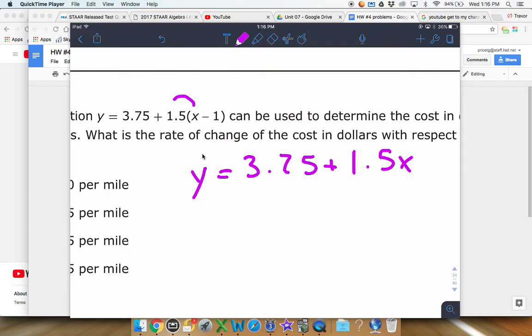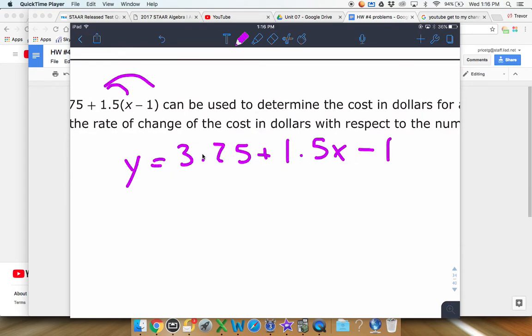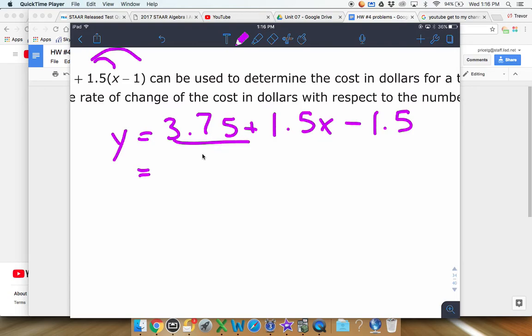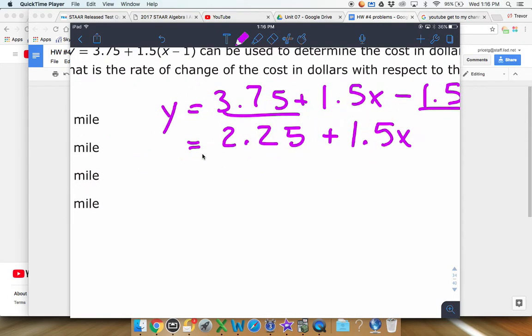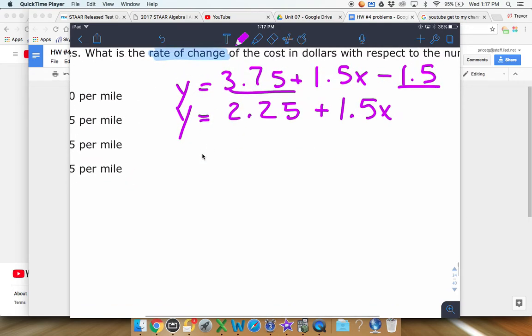So we're going to say that's 1.5x, and then minus - negative one times 1.5 is just minus 1.5. And then I guess we can combine our like terms and add those up. So you got the 3.75 and the 1.5, so I think that's 2.25, and then plus 1.5x. And then from there, it's asking what is the rate of change, and essentially that's asking for what is the slope.